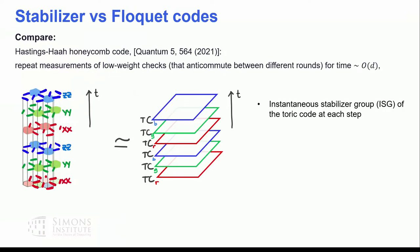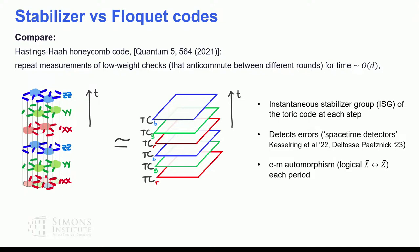The first non-trivial example of a Floquet code is the famous Hastings-Honeycomb code, where we perform two-qubit measurements that don't commute between different rounds in time, but we also realize a Toric code at each point in time. Though the specific microscopic details of the Toric code change from round to round periodically with period three, this code also has the additional property that it exchanges logical operators every three rounds.